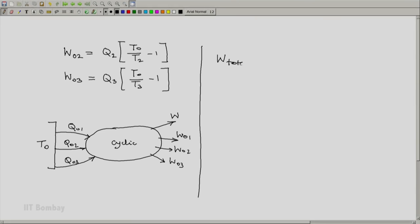Now let us see the amount of work done. The total work done by this machine is the sum of these four work interactions: W plus W01 plus W02 plus W03. Let us substitute for each one: W is Q1 plus Q2 plus Q3. W01 is Q1(T0/T1 minus 1) plus Q2(T0/T2 minus 1) plus Q3(T0/T3 minus 1).